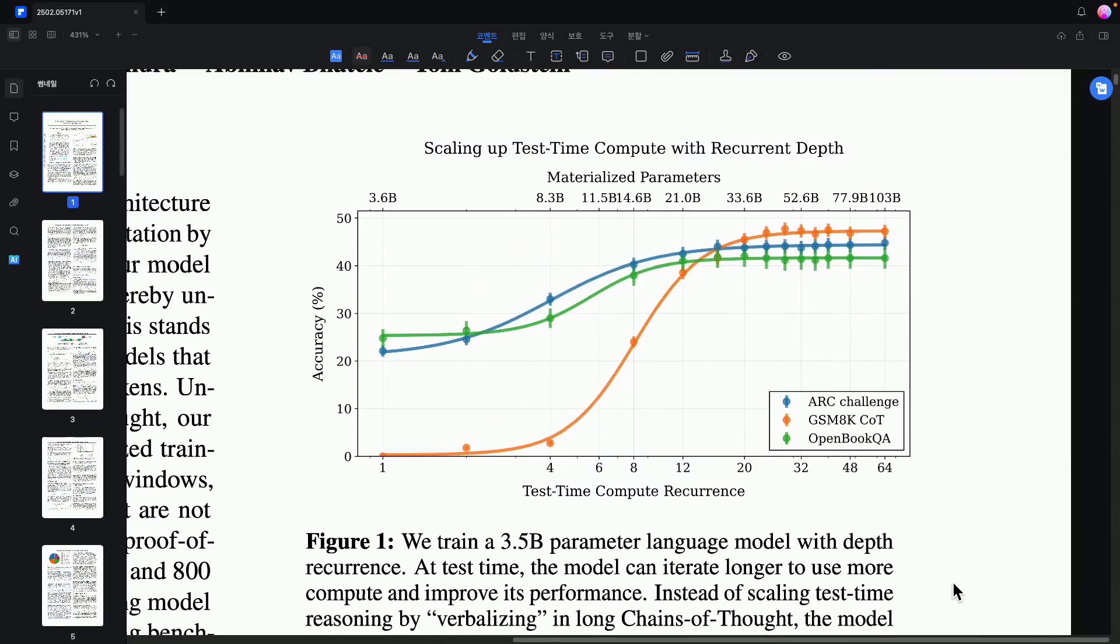In fact, if you look at figure 1, the horizontal axis shows the number of test-time compute recurrences. When we repeated the number of test iterations, we found that the model's performance steadily improved. Like in the GSM 8K or ARC challenges. This is an eight-part math problem at the elementary school level in the US. We noticed that the accuracy improved, although it is still below 50%.